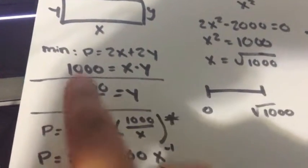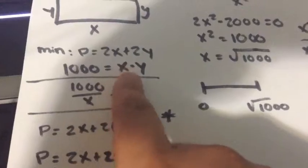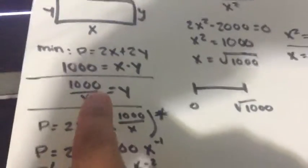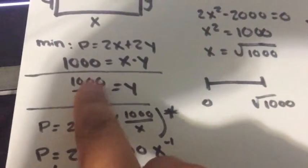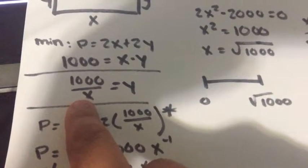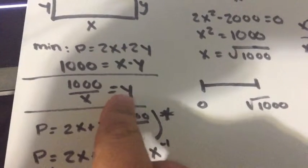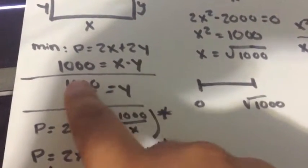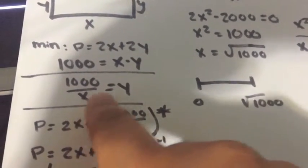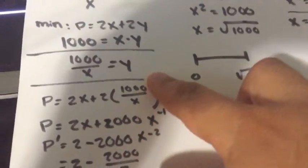And the area will be 1000 equals x times y. And so you're going to use this constraint and plug it in. So you just divide both sides by x to get 1000 divided by x equals y. So it's y by itself.